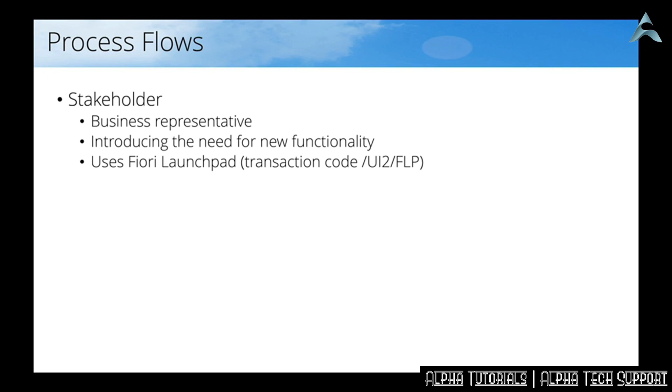We laid down the groundwork — we know about rapid application development, Business Rule Framework, and the differences between Waterfall and Agile. Let's look at various process flows. First I want to introduce the stakeholder — this is the business representative responsible for defining all the features that need to get deployed in a productive system. This person normally spends their day on the Fiori launchpad, starting on the dashboard and triggering all the transactions found there.